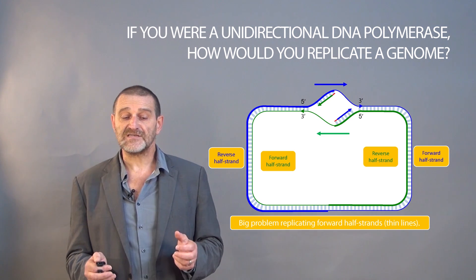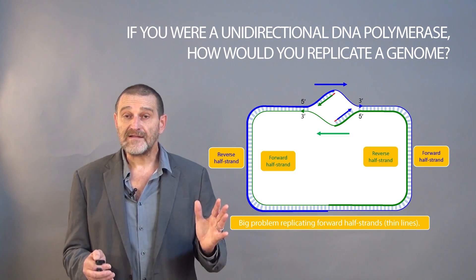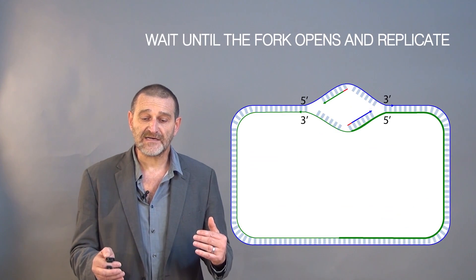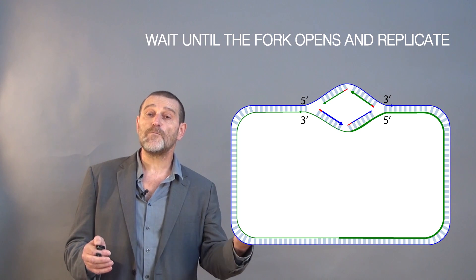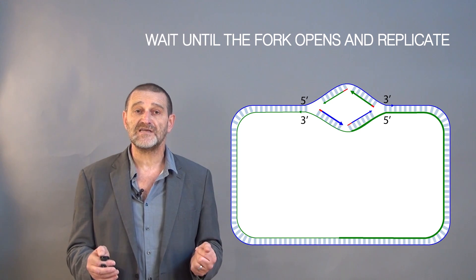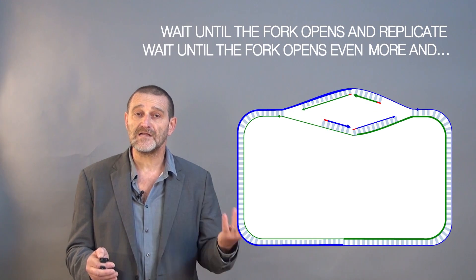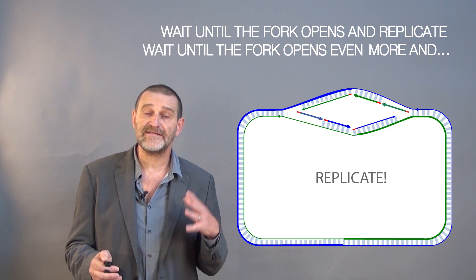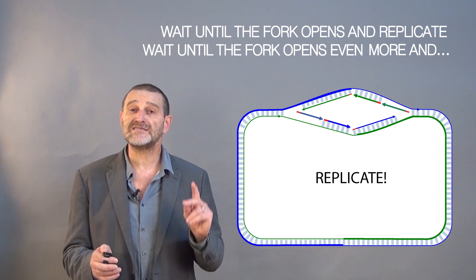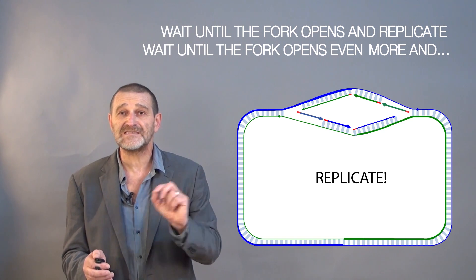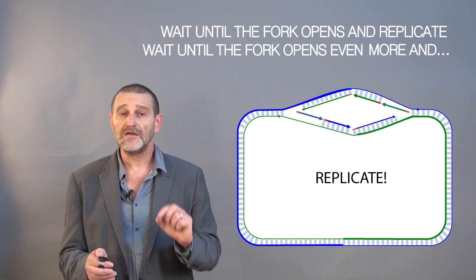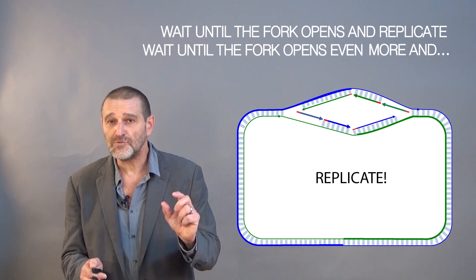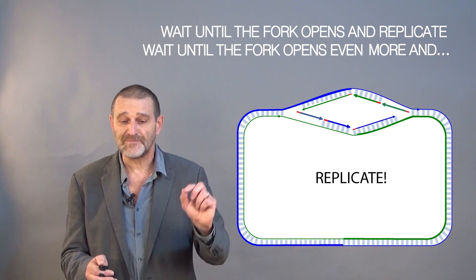Here is a potential solution. Wait until the fork enlarges. When it enlarges, start replicating it in the opposite direction, in the same direction as DNA. Then the fork enlarges a little bit more. You put another DNA polymerase and continue replicating. Four DNA polymerases won't be enough because each copied just approximately 3000 nucleotides. You may need a huge number of DNA polymerases to proceed this way.